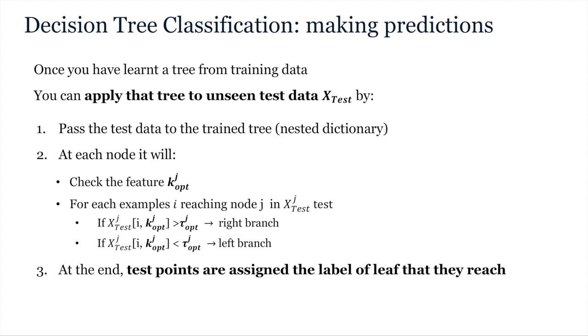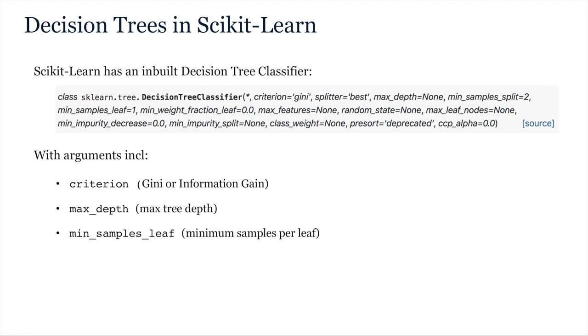Such that then, when you subsequently test, it's possible to pass the test examples down the same function which reads that nested dictionary, and these will then go through the same process, splitting on the optimal feature for each node j, using the threshold tau-opt j, and passing down either the left or right branches depending on the outcome of that threshold operation. So at the end, test examples will be assigned the label of the leaf that they reach.